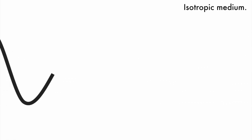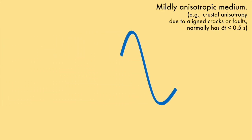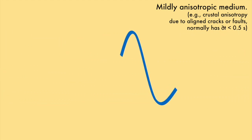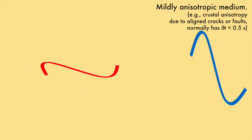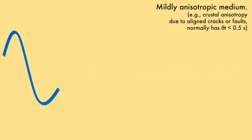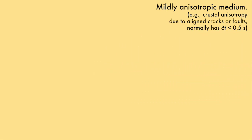We have an S wave, so let's put it in an anisotropic medium and see what happens. Here we are — it's anisotropic. We have a fast shear wave. The slow one is obviously slower, so let's wait. Hooray, there's the slow shear wave. And yes, it's slower. That's some good anisotropy.